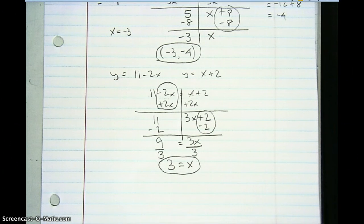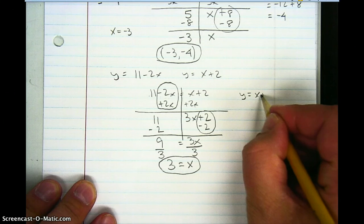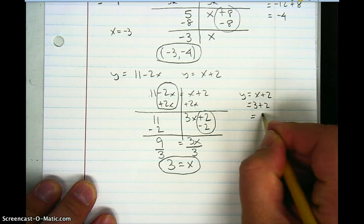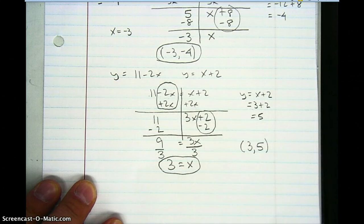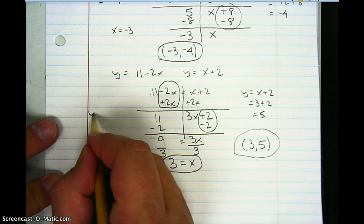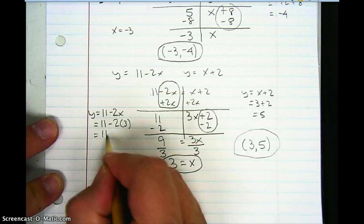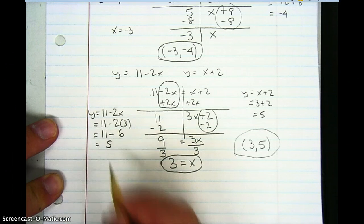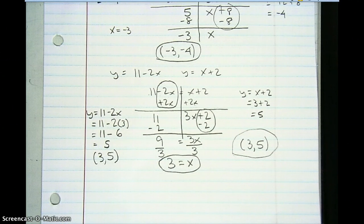The x value where those two lines intersect is 3. Plugging 3 into y equals x plus 2: y equals 3 plus 2 equals 5. So the x coordinate is 3 and the y coordinate is 5, giving the point 3, 5. To verify, using the other equation: y equals 11 minus 2 times 3, which is 11 minus 6 equals 5. Both equations give the point 3, 5 — that is the point of intersection.